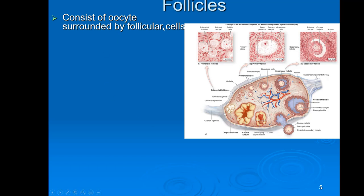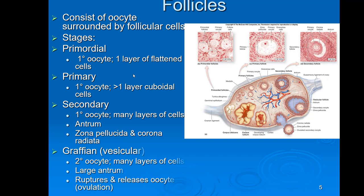A given follicle in the ovary consists of an oocyte surrounded by cells called follicular cells. There are four major stages: primordial, primary, secondary, and graafian. The graafian follicle is the mature follicle, and that's the one the egg will be released from during ovulation. Oocytes also go through stages — they start as a primary oocyte and become a secondary oocyte when mature — and you'll see that change as follicular development progresses.